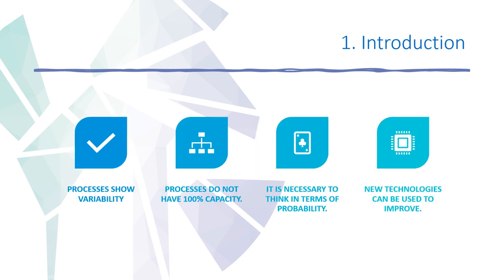The need to apply the Six Sigma methodology in production processes is motivated by the following reasons: all processes show variability, processes are not perfect, they have a limited capability. It is necessary to apply statistical thinking in terms of probability, and new tools and technologies can always be applied in the Six Sigma context.